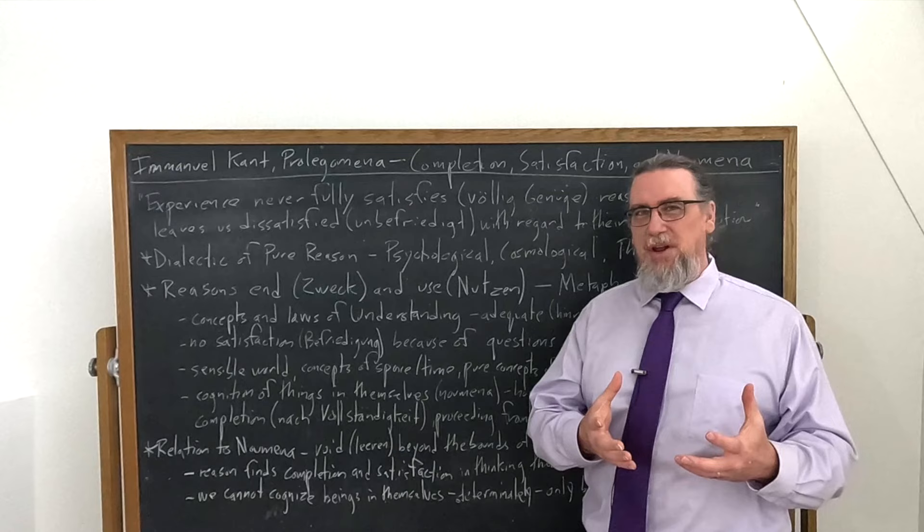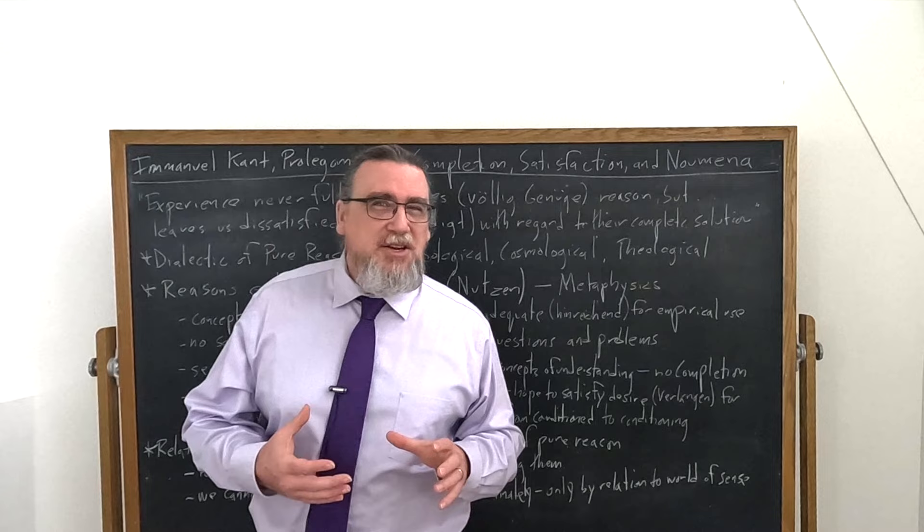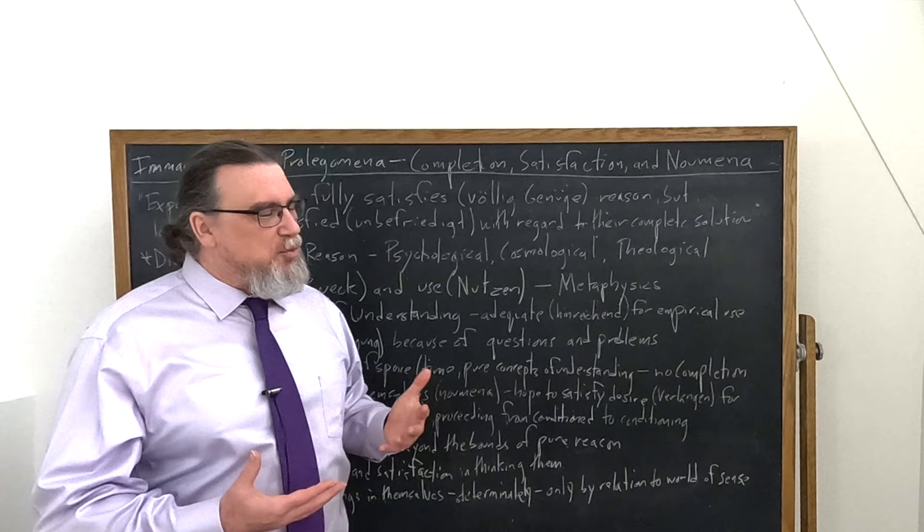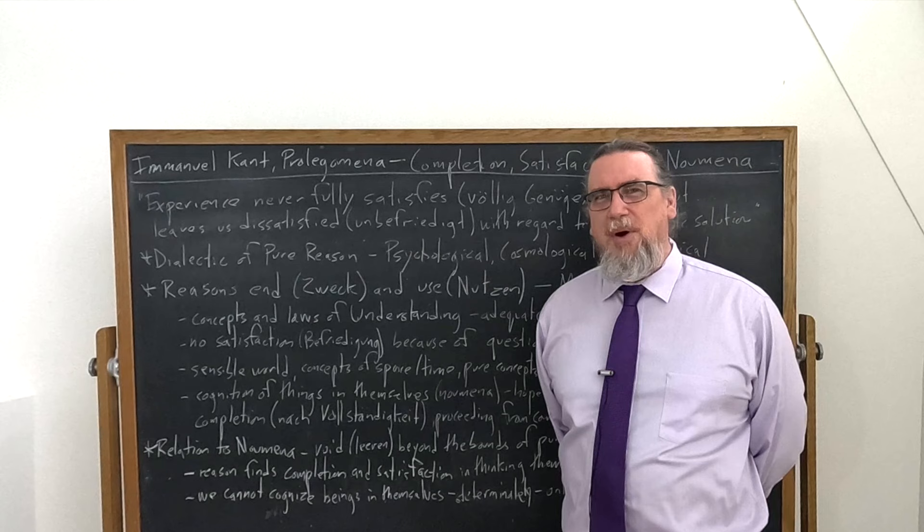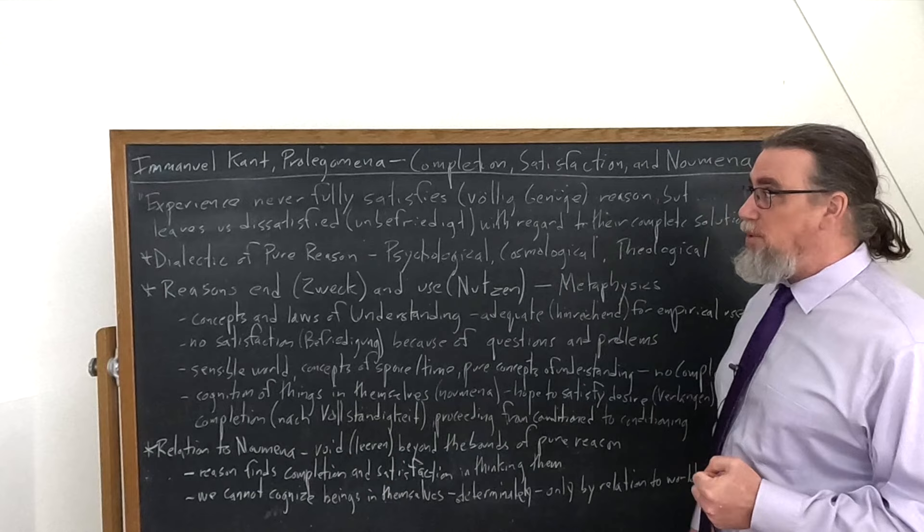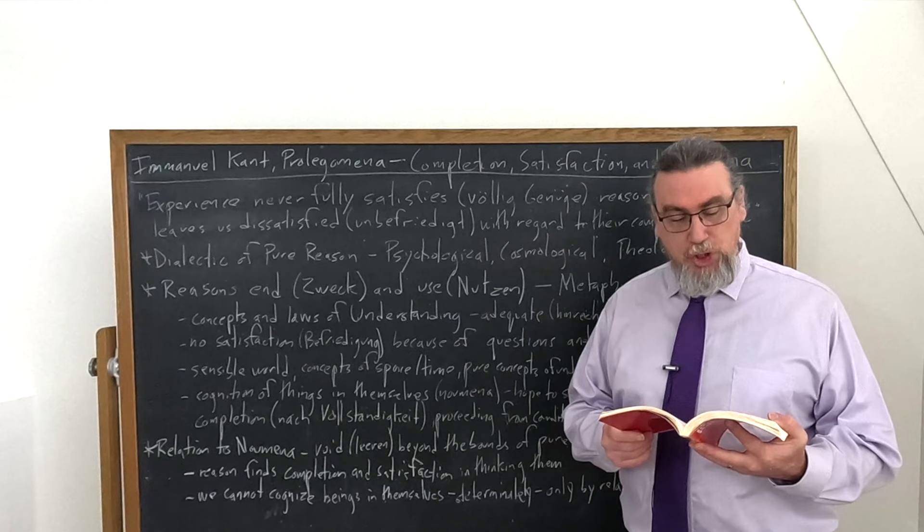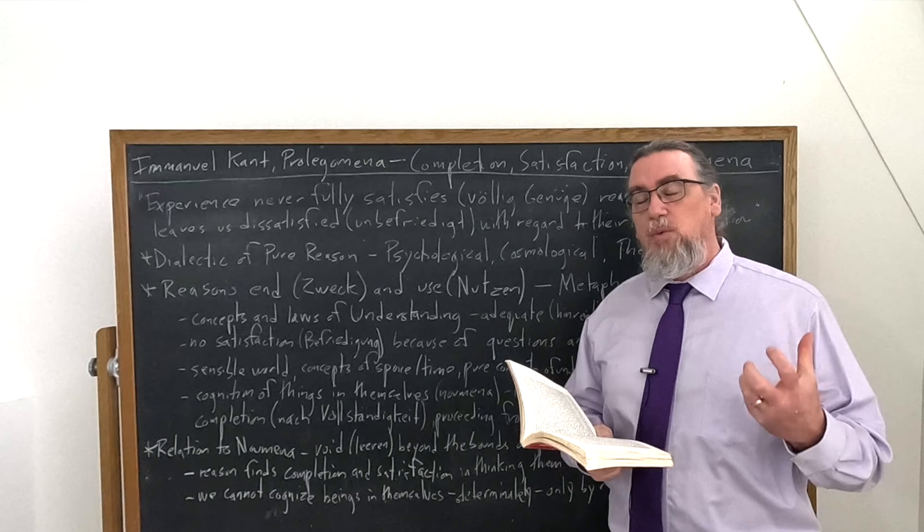We have completion, which we've already seen plays a massively important role earlier on in this section and satisfaction and affective term. And what's really remarkable about this section is that Kant is not going to use emotion language, but he is going to use the language of a broader affectivity. Reason has desires or longing reason wants. So this is quite important. And then he's going to talk about the dialectic of pure reason as having shown this to us. And he's going to talk about the psychological and cosmological and theological ideas. Why do we have to engage with these?